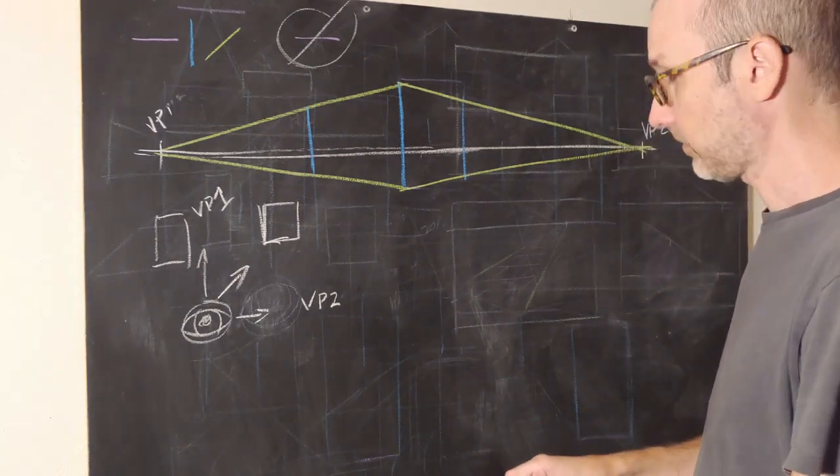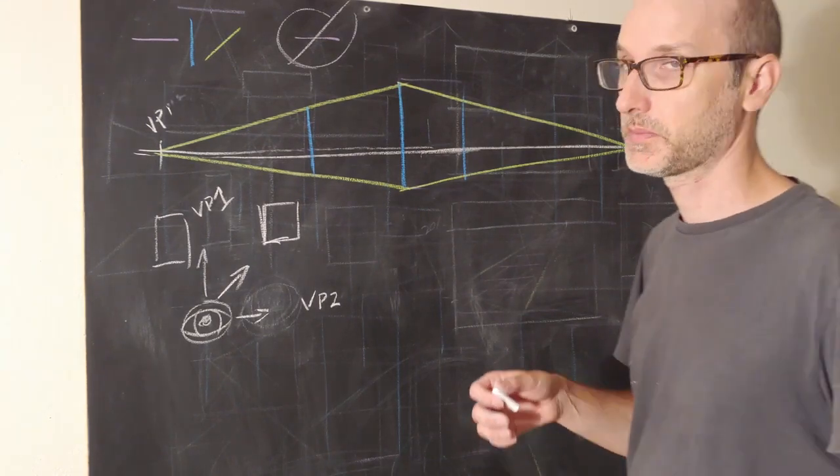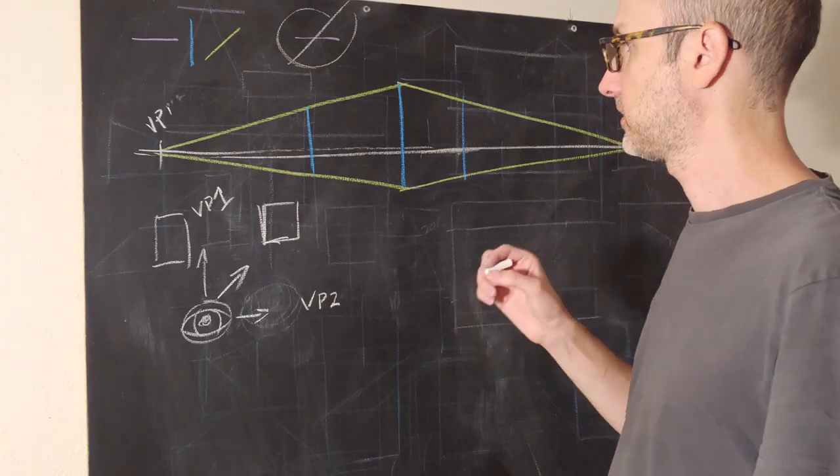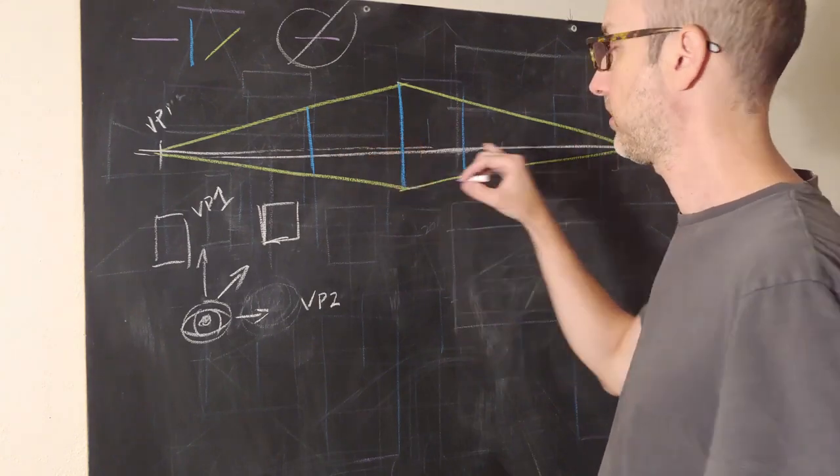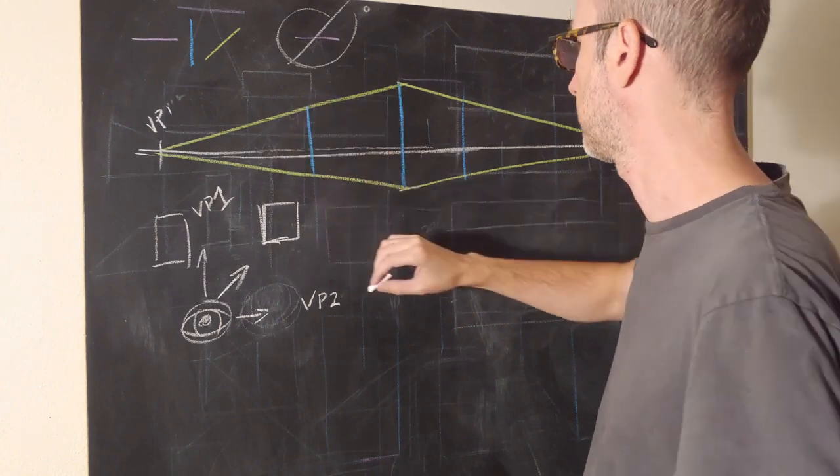So the most important thing to remember is that when you're composing in two-point perspective, the vanishing points are going to be off the page. If you keep the vanishing points on the page, you're going to start mixing information from one-point perspective, and it's just going to confuse you.